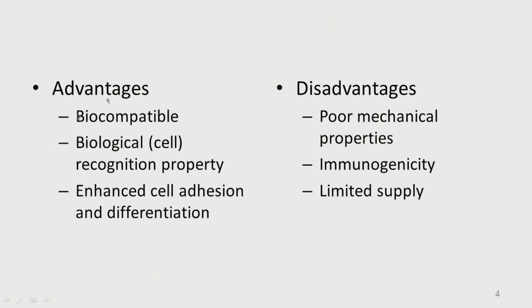Advantages: they are biocompatible and recognized by the cell, so you will have very good cell adhesion and cell differentiation. When using a biopolymer-based scaffold, you can see very good cell adhesion and proliferation taking place, unlike a synthetic polymer. Sometimes we mix synthetic polymers and biopolymers to improve the cell adhesion process. Disadvantages: they have very poor mechanical properties — they cannot take much stress or have good flexural properties — and there is a risk of immunogenicity, especially if derived from animals.